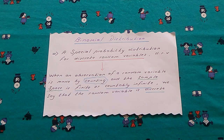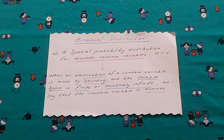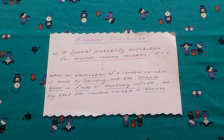Hi everyone, welcome to my channel. In this video we're going to look at the binomial distribution. A binomial distribution is a special probability distribution for discrete random variables. A discrete random variable is one where an observation is made by counting and the sample space is finite or countably infinite.